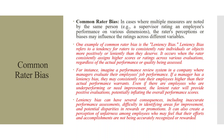Leniency bias occurs when the rater consistently assigns higher scores or ratings across various evaluations, regardless of the actual performance or quality being assessed. For instance, in a performance review system, a manager with leniency bias may consistently rate employees higher than their actual performance warrants. Even if employees are underperforming or need improvement, the lenient rater will provide positive evaluations, potentially inflating overall performance scores. This can lead to inaccurate performance assessments, difficulty identifying areas for improvement, potential disparities in rewards and promotions, and a perception of unfairness among employees.